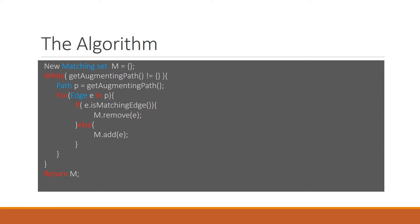Here is some pseudocode for the algorithm. First we create a new empty matching set. Then we enter our main while loop which will continue to find new augmenting paths until no augmenting paths remain. We start by finding a new augmenting path, in this case called P. Then we find the symmetric difference of our augmenting path and our matching set — if an edge is a member of both the matching set and the augmenting path we remove it, and if it is a member of the augmenting path but not the matching set we add it. When no augmenting path remains we exit our while loop and return our matching set.